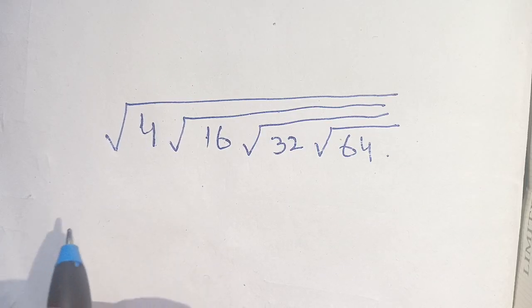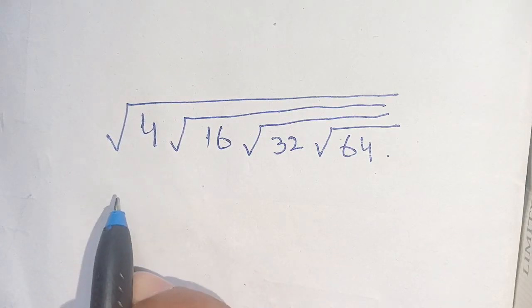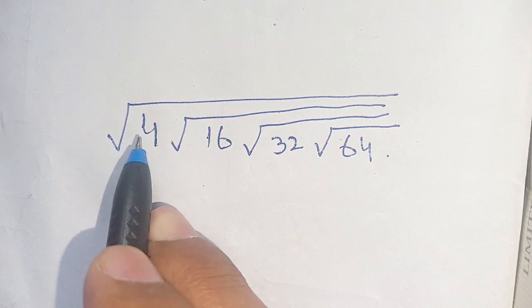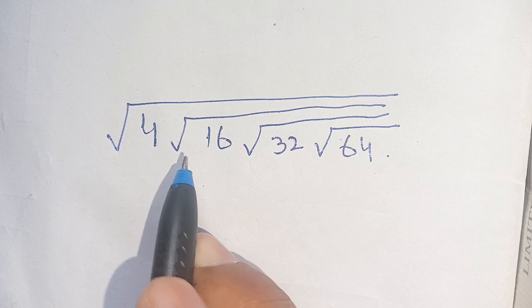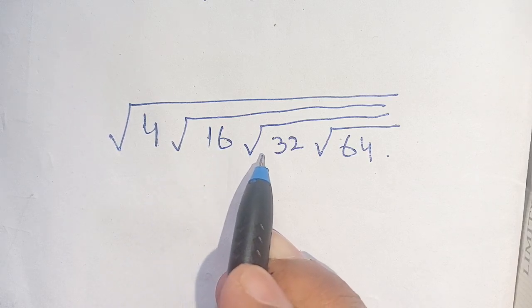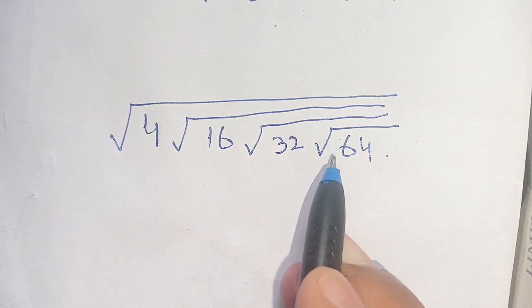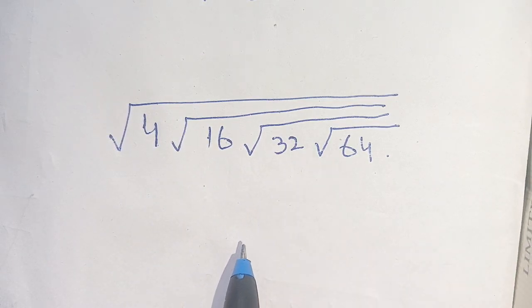Hello everyone. In today's video we are going to solve this square root problem: square root of 4 times square root of 16 times square root of 32 times square root of 64.